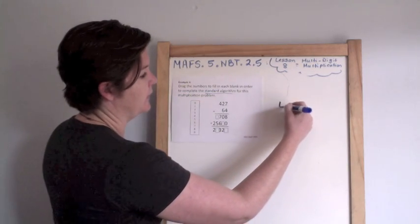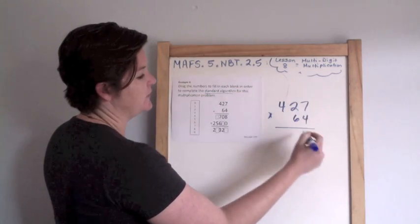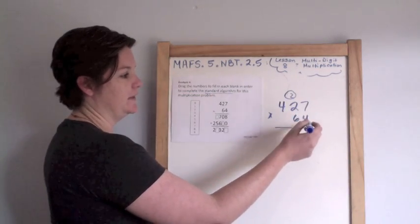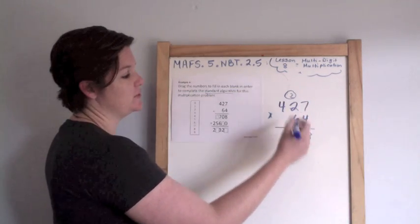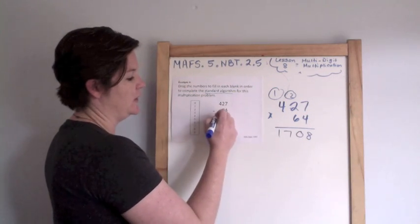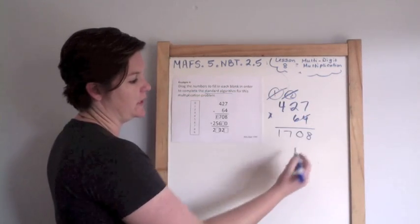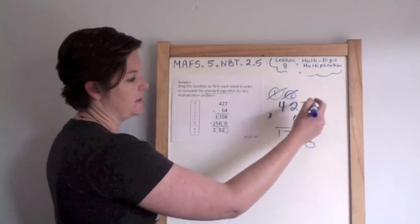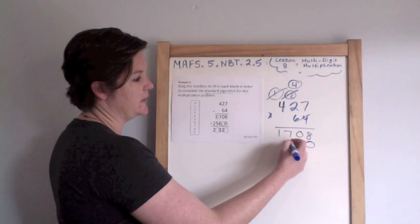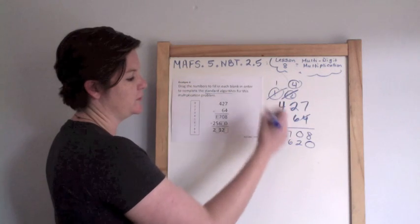427 times 64. 4 times 7 is 28. This is why you've got to be fast with your multiplication tables, guys. Because it's a lot. It never goes away. 4 times 2 is 8, plus 2 is 10. 4 times 4 is 16, plus 1 is 17. So here I see it should be a 1. Cross it out. Now cross it out. Now cross it out. Zero to hold the place. 6 times 7 is 42. 6 times 2 is 12, plus 4 is 16. 6 times 4 is 24, plus 1 is 25.